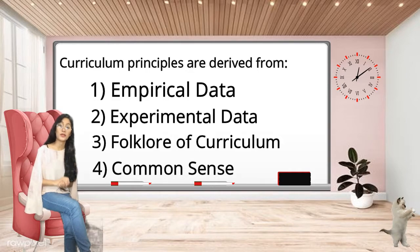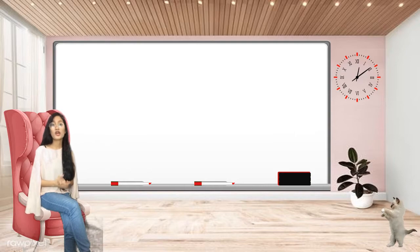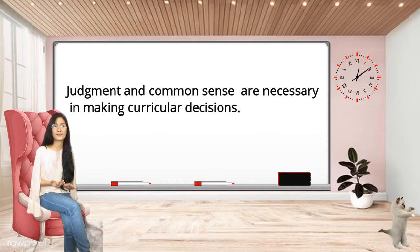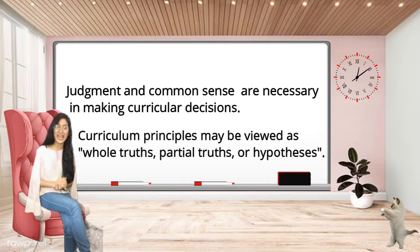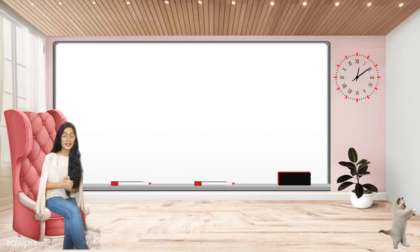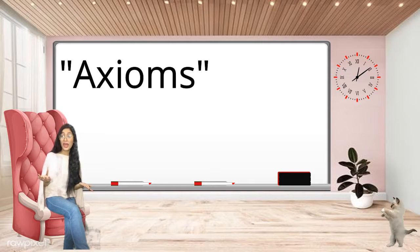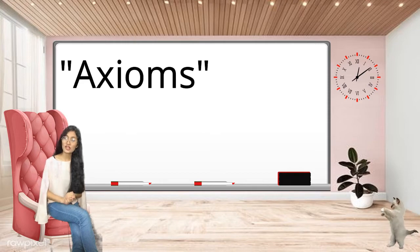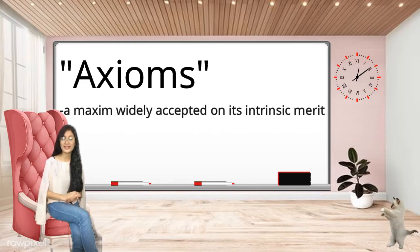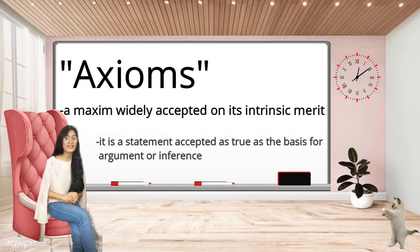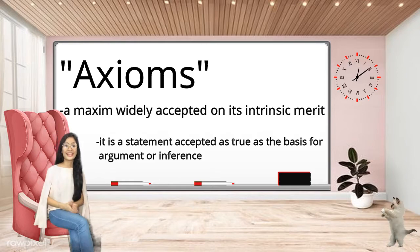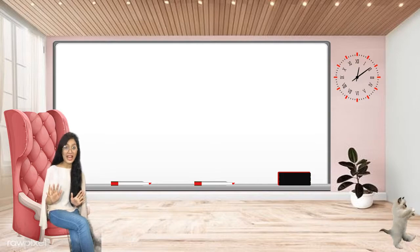Principles based on science alone can be rigid and restrictive, and the use of common sense in making curricular decisions can also be distrusted. Therefore, judgment and common sense are necessary in making curricular decisions. Oliva states that curriculum principles may be viewed as whole truth, partial truth, or hypothesis. But instead of speaking in terms of whole truths and partial truths, we might be more accurate if we speak of axioms. But what is an axiom anyway? The College Dictionary defines an axiom as a maxim widely accepted on its intrinsic merit — a statement accepted as true as the basis for argument or inference. So now, let us identify the 10 general axioms of curriculum development.